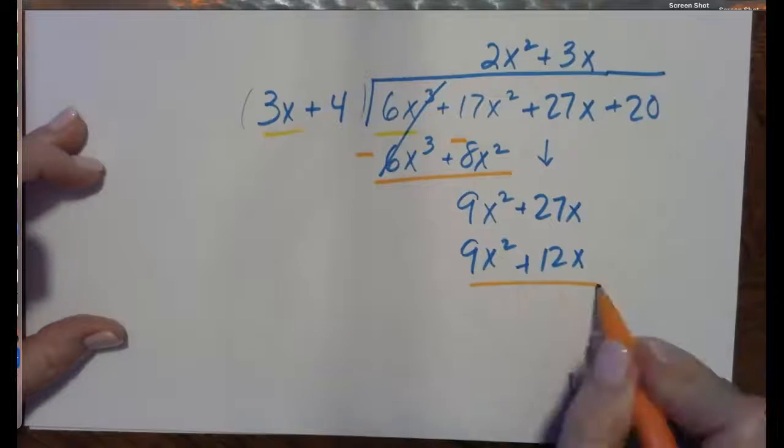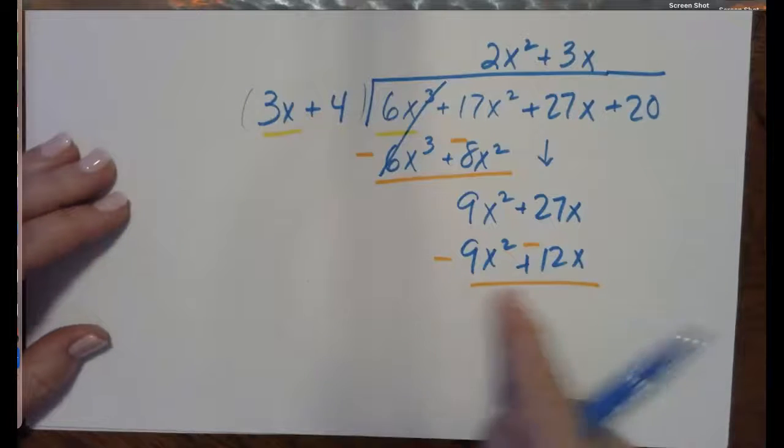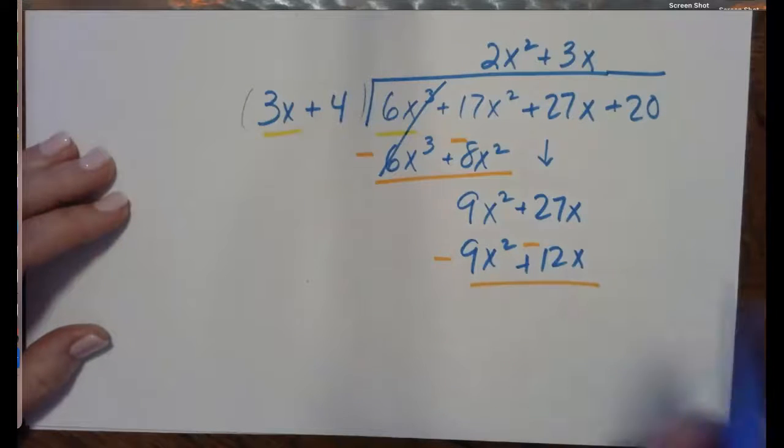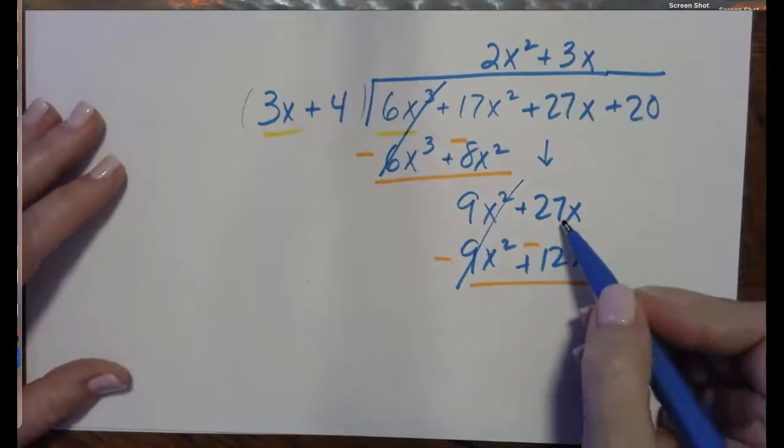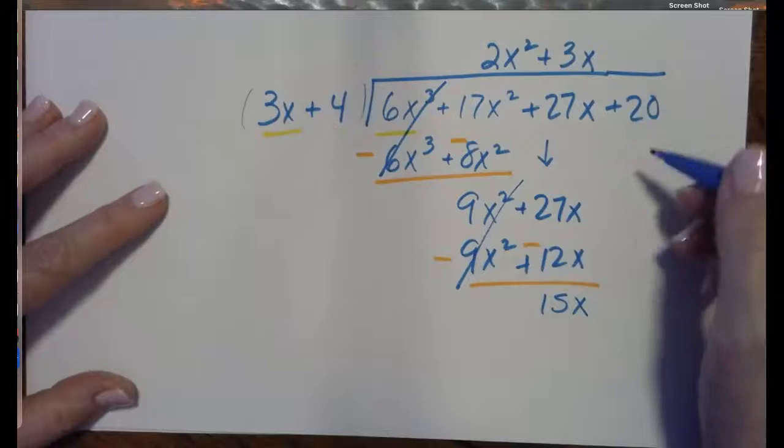3x times 4 plus 12x. Again, draw the line, change the signs. Remember, that is what enables us to subtract when we distribute the negative one through. 9 minus 9, that first column must cancel. 27 minus 12, 15x. That's subtracting.